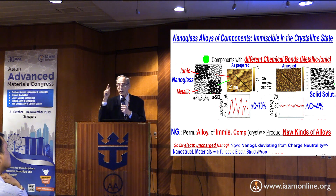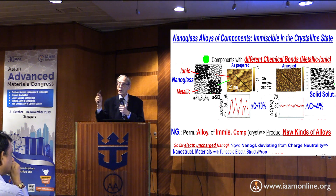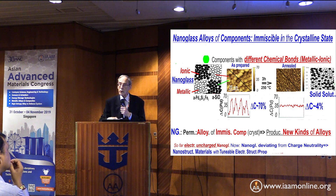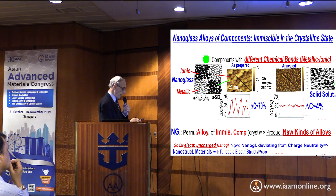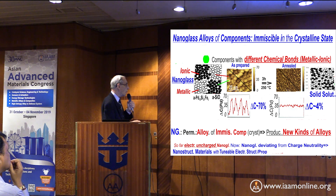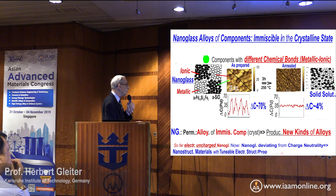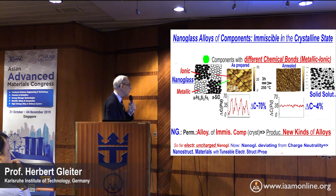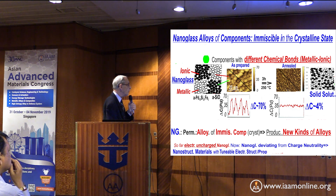When you think about the fact that glass is structurally a liquid, you know that you cannot dissolve sugar in ice, but you can dissolve honey in water. That's exactly what happens here too. Here is an example of a nanoglass alloy of components that are immiscible in the crystalline state: an ionic component of silicon oxide shown in black, and a palladium metallic glass in white.